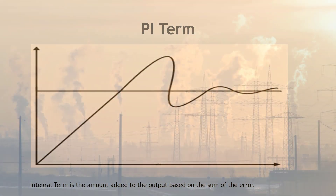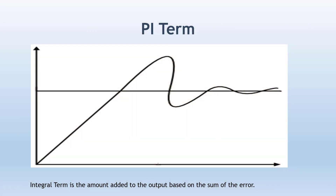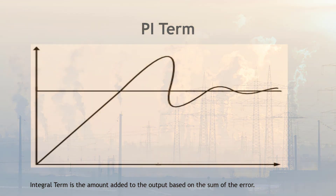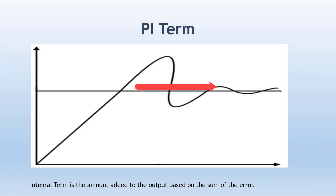Along with P, you need to have the I term as well. Integration means sum up — the integral term is the sum of errors. It is not talking about the current error; it is talking about past errors too, summing all of them up. Based on that, the integral term is added to the output to take care of all past errors and achieve better control. When you introduce the I term, you would see the process variable get back to the set point very quickly, with the deviation between set point and PV getting smaller.